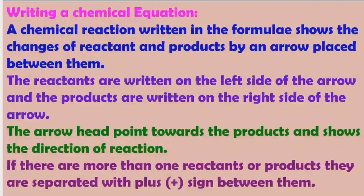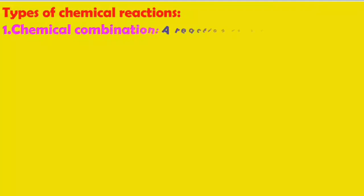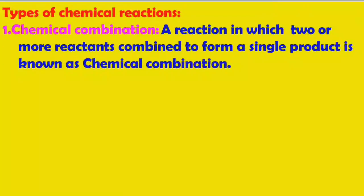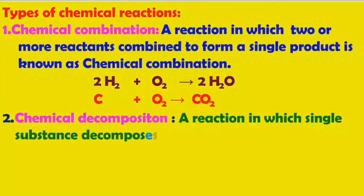Now we will discuss types of chemical reactions. The first type is chemical combination. A reaction in which two or more reactants combine to form a single product is known as chemical combination. For example, hydrogen and oxygen combine to form water, and carbon and oxygen combine to form carbon dioxide.